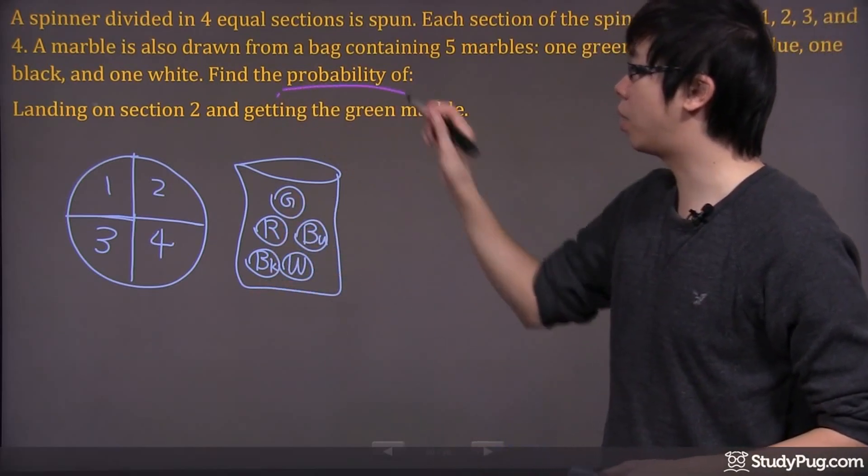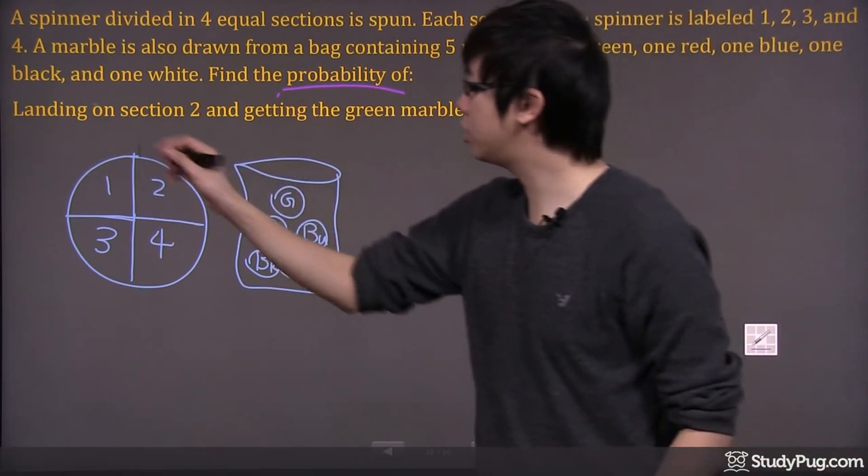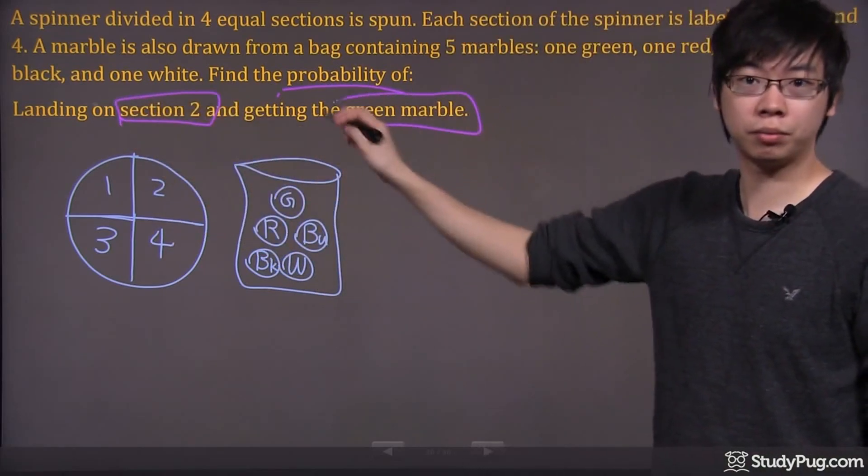Your task is to figure out the probability of landing on section two and getting the green marble.